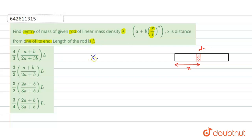The center of mass formula is: x_cm equals one over total mass M, integrated as x dm, where dm is the mass of the small portion. We will take the limit from 0 to l, because the rod extends from 0 to l.